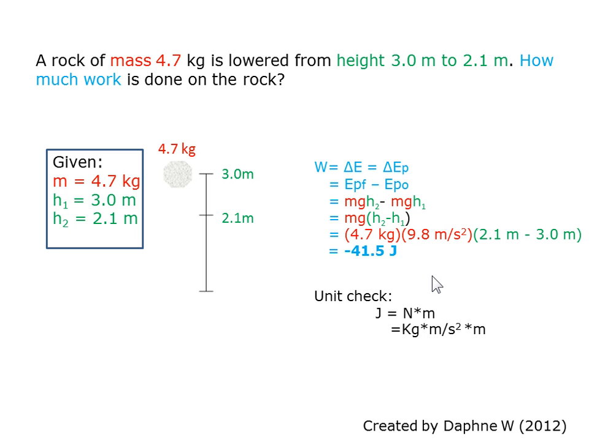So if we want to check the units, we find that a joule is equal to a newton times a meter, and a newton can be substituted as a kilogram, 4.7 kg in this case, times a meter per second squared, which is the gravity of 9.8, times a meter, which in this case is the difference in height.